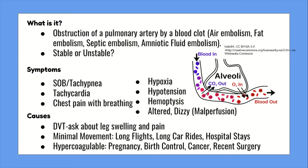A key thing that will dictate treatment is differentiating whether the patient is hemodynamically stable or unstable. For example, a massive saddle PE where the blood clot is at the bifurcation of the pulmonary trunk where it splits into the right and left pulmonary arteries — if the blood clot is there it can limit blood flow and cause severe hemodynamic instability requiring aggressive management and treatment.